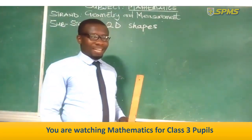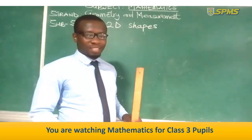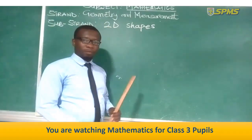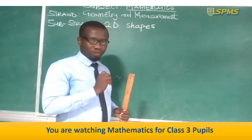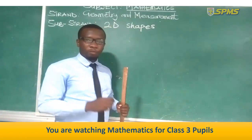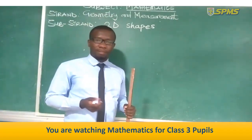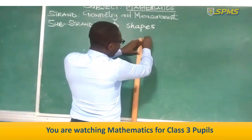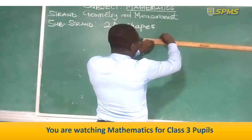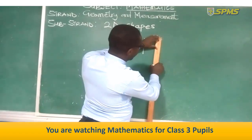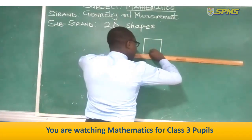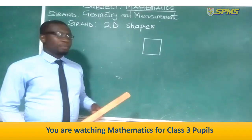I hope you are enjoying the lesson. Now, take your jotter and let's draw some 2D shapes. Let's draw a square. In drawing a square, we know that all the sides must be equal. So on my ruler, I am choosing 15 centimeters. You can choose 10, 20, or 5 centimeters. I draw all four sides at 15 centimeters each. So now we have a square.